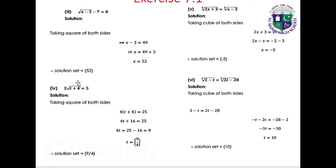Part 4: 2√(t plus 4) equals 5. Taking the square of both sides: 4(t plus 4) equals 25, giving 4t plus 16 equals 25, so 4t equals 9, therefore t equals 9/4. Solution set: {9/4}.